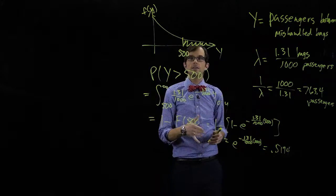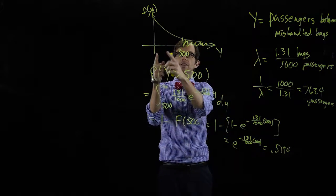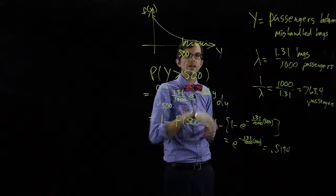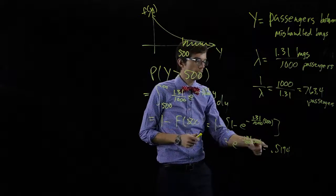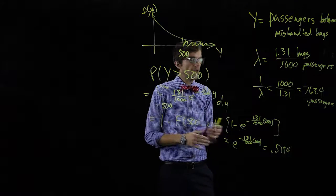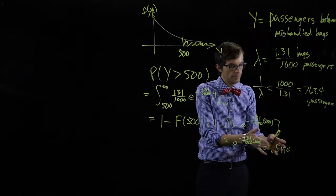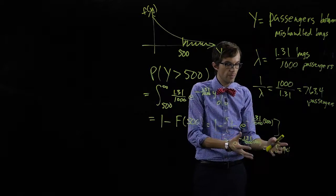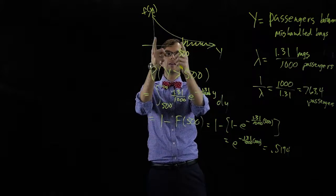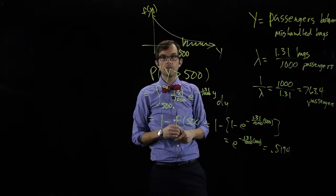So what does that say? That says we have to see at least 500 passengers before our next mishandled bag with probability 0.5194. Roughly fifty percent of the time there is no mishandled bag in the first 500 passengers.